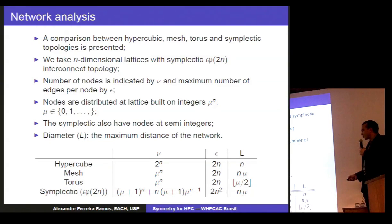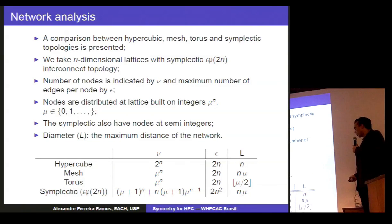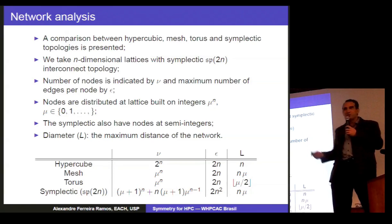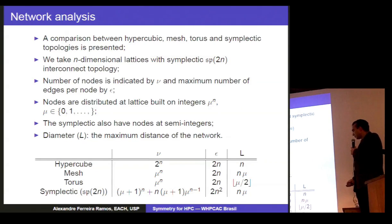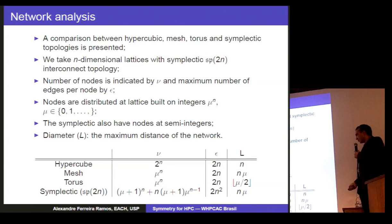The diameter or the maximum distance between two nodes of the network will be indicated by L. If we take the hypercube at n-dimension, it will have 2 to the power of n nodes. And each node will have 2 times n edges coming out of it. And the maximum distance between two nodes is given by the dimension of the network. The mesh, we substitute 2 by mu. The number of edges coming out of each node will be maximum equals to 2 times n. There are also the boundary nodes. Those ones have different connection properties. The torus is very similar to the mesh. You just have to connect the ending nodes together. It is the blue gene arrangement. But it has an advantage that the maximum distance is reduced by half of the amount of nodes.